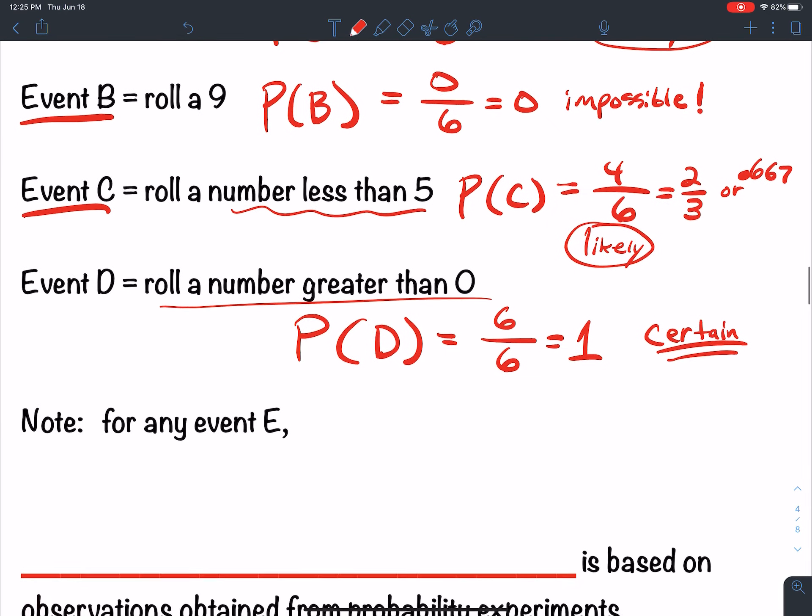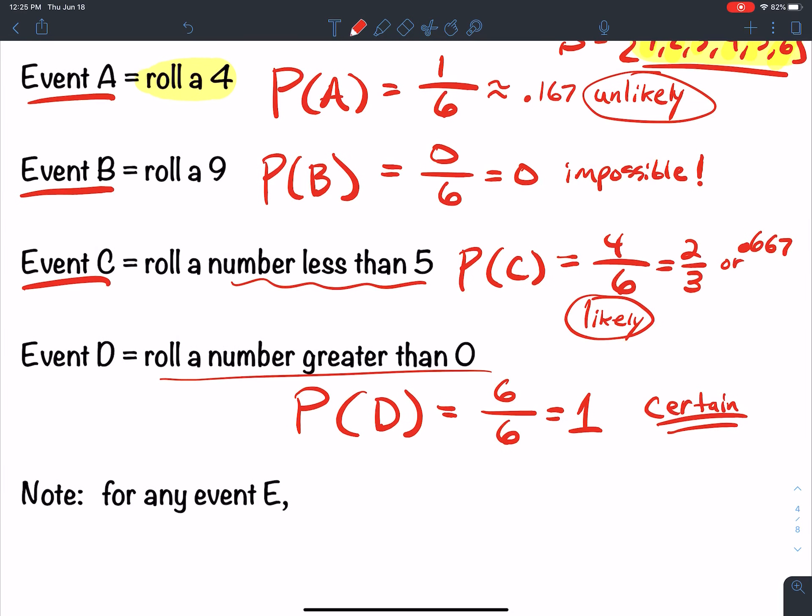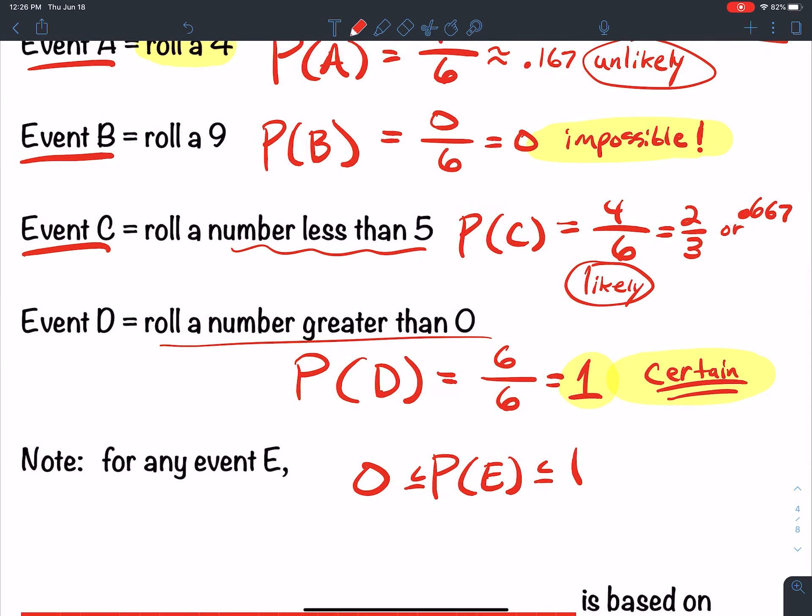So for any event E, the probability of E is stuck between two numbers. What's the lowest your probability can be? It could be an impossible event with a probability of zero. And what is the biggest your probability can be? It can be a certain event where it's guaranteed to happen, which is equal to one. So for any event E, your probability is between zero and one inclusive.